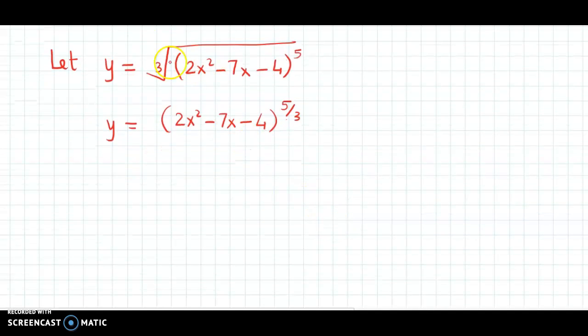Now we use the chain rule. This is x raised to n form. For x raised to n, the derivative is n times x raised to n minus 1.